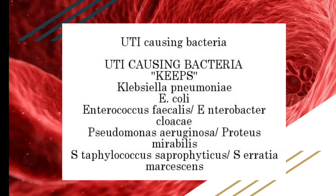This is tip point number two of this video: UTI-causing organisms. The key organisms are Klebsiella, E. coli, Enterococcus faecalis, Pseudomonas aeruginosa, Proteus mirabilis, Staphylococcal species including S. saprophyticus, and Serratia marcescens.